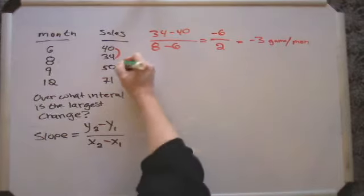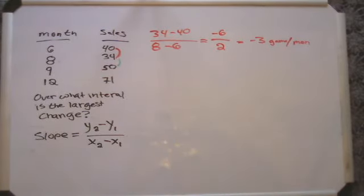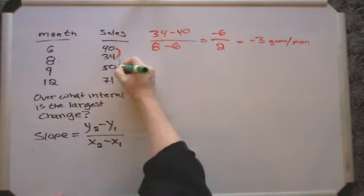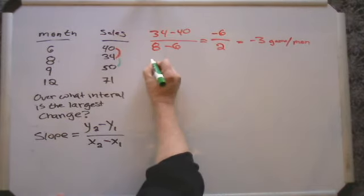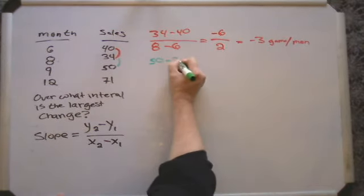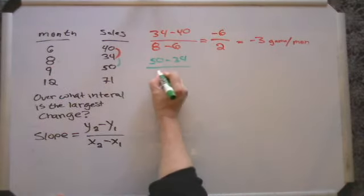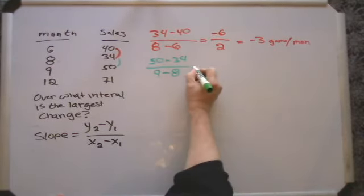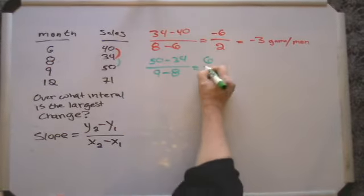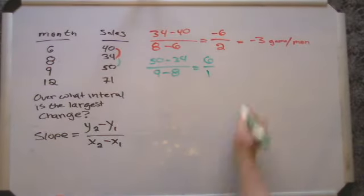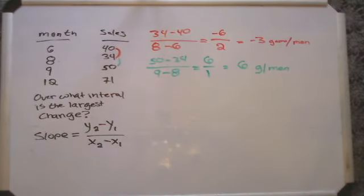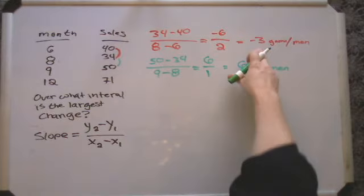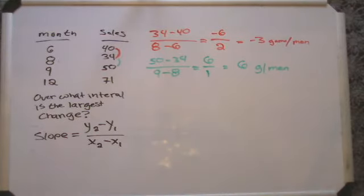And now let's take a look at the second interval, and that's the interval between September and August. So we take the y value minus the x, y₂ minus y₁, subtract the two y's. So 50 minus 34, and 9 minus 8. So that gives me a positive 6, this time over 1. So we saw a change of 6 games per month sold. So we're in a positive direction, we're going up. And it looks like we're going up faster than we were going down in our games per month trend.